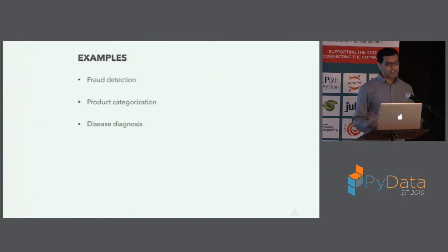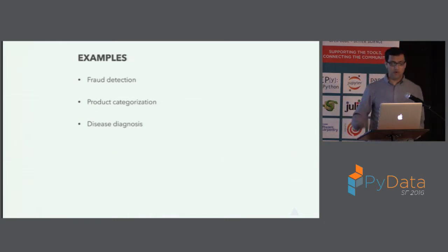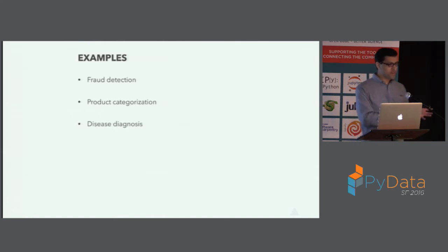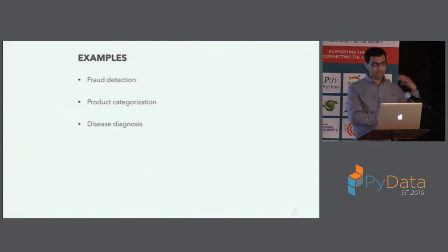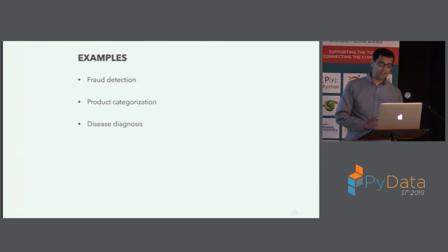The next example, which is close to the domain I work in at Walmart, is product categorization. Say you're a retailer and you sell a lot of products — iPhones and iPhone accessories. Typically, if you're optimizing for revenue, you want users coming to your website to be able to find the iPhones, while accepting some cost of iPhone accessory buyers seeing iPhone results.